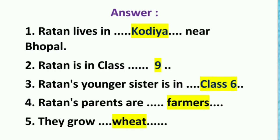Answers. 1. Ratan lives in Kodia near Bhupal. 2. Ratan is in class 9. 3. Ratan's younger sister is in class 6. 4. Ratan's parents are farmers. 5. They grow wheat.